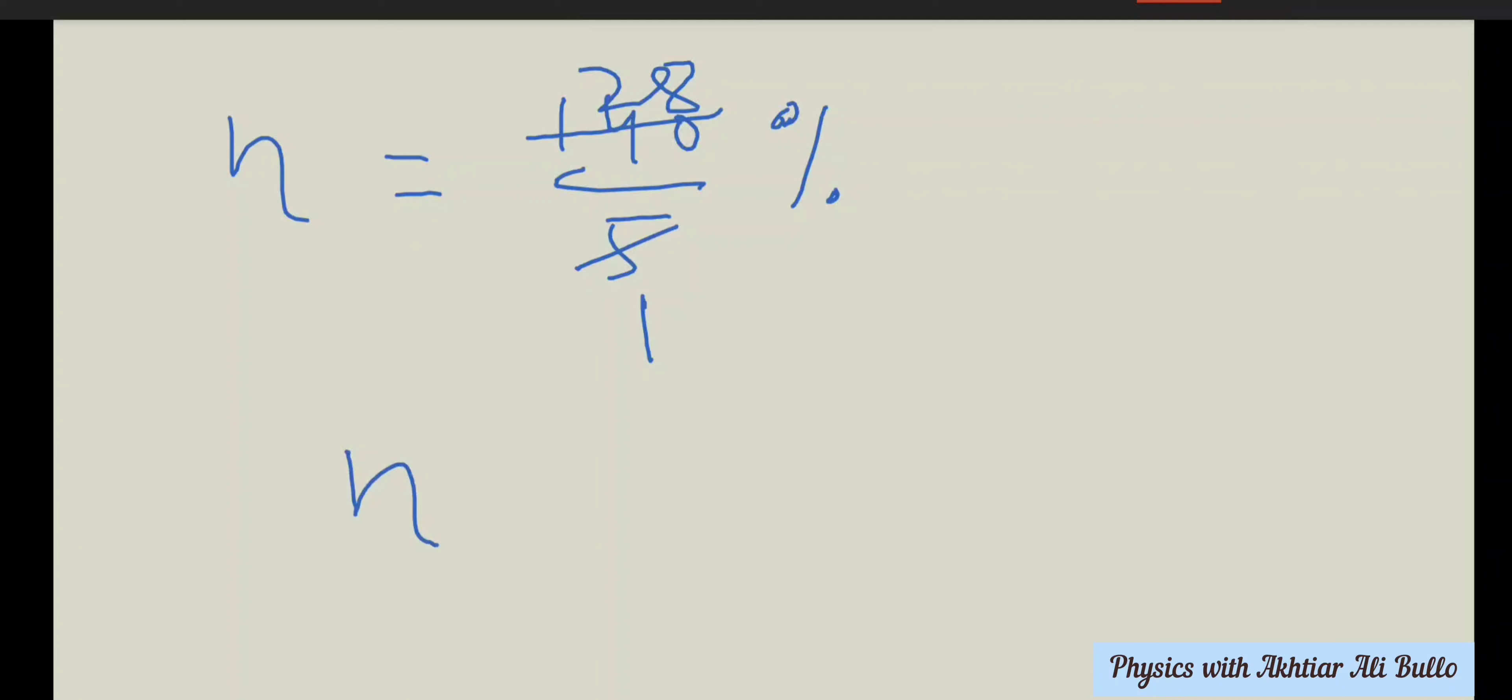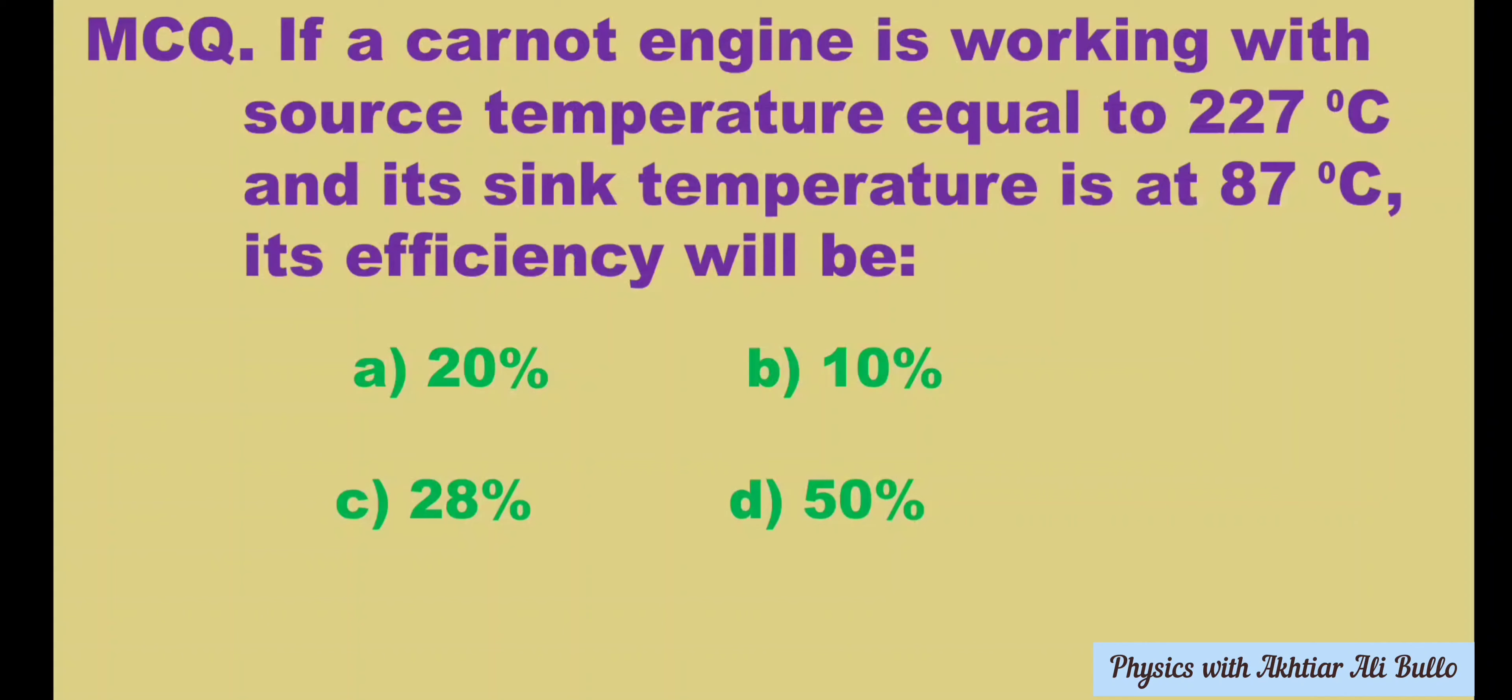The efficiency of the Carnot engine is obtained as 28%, so the correct option is C.